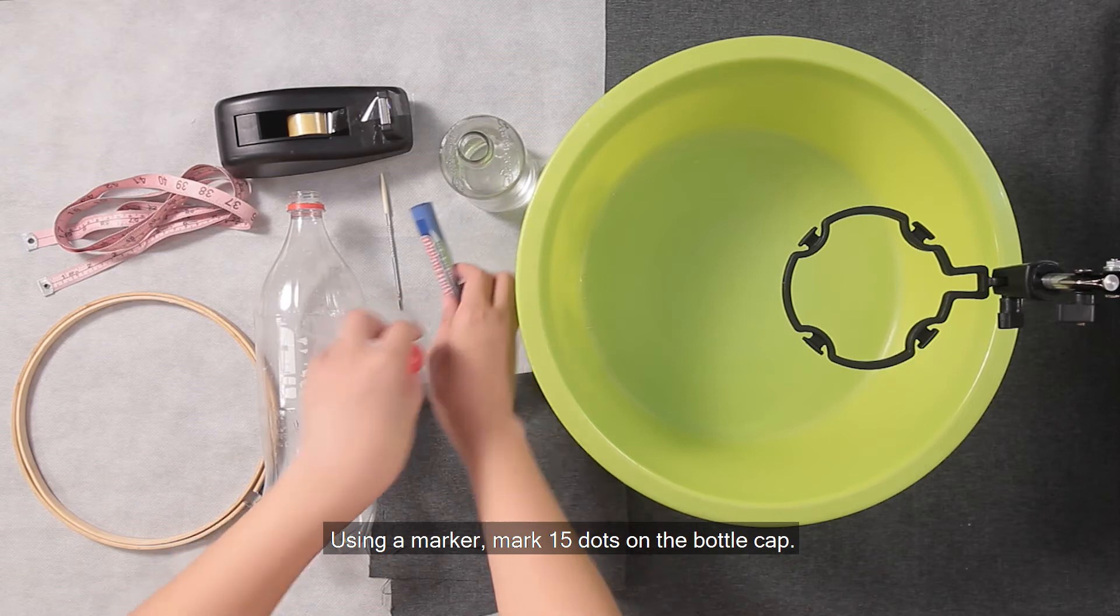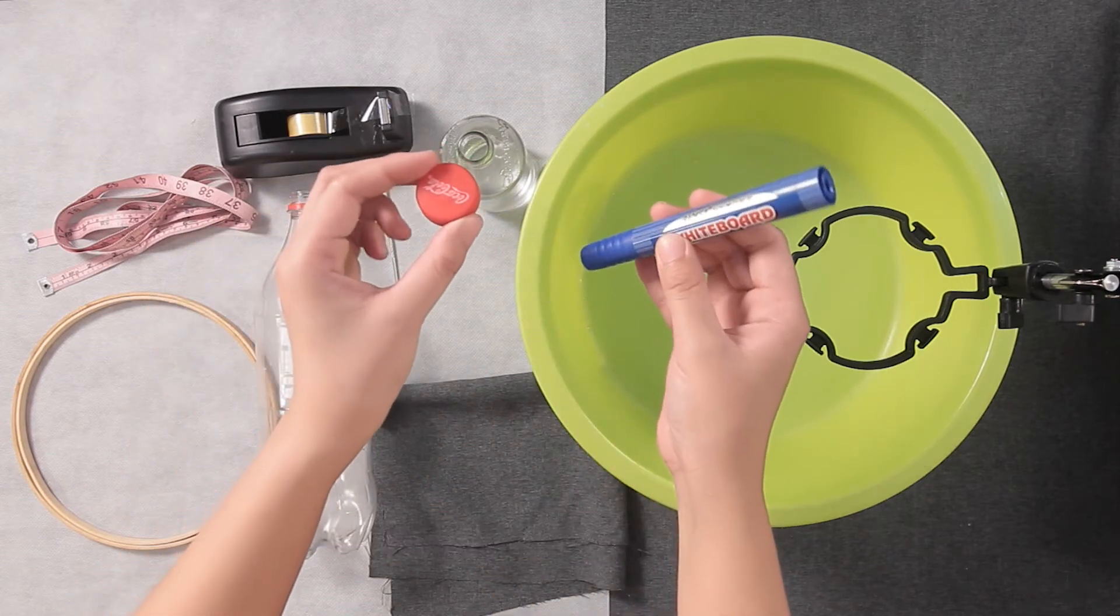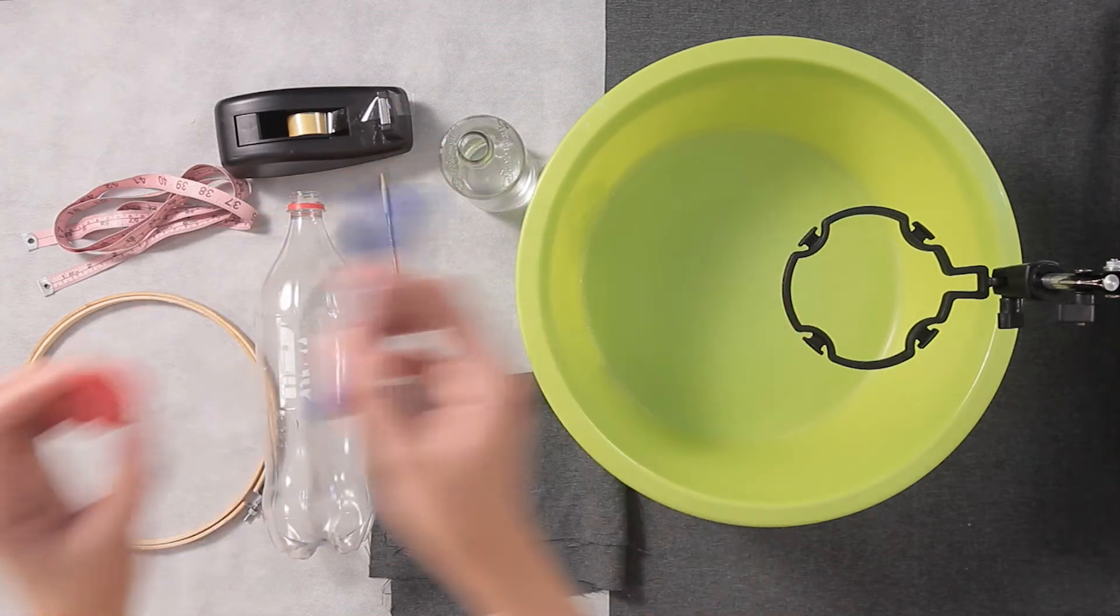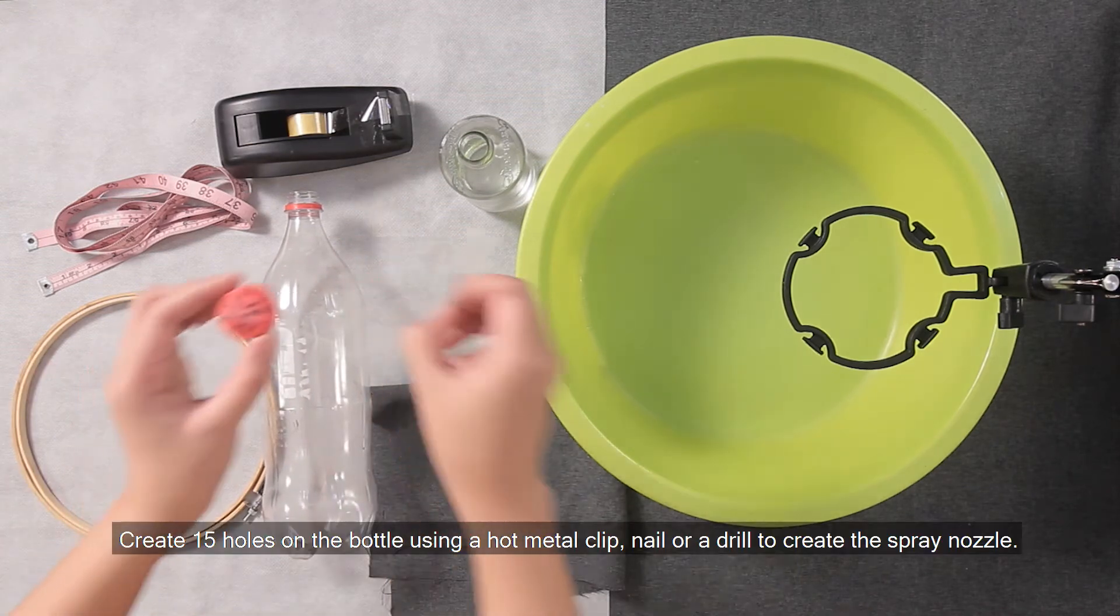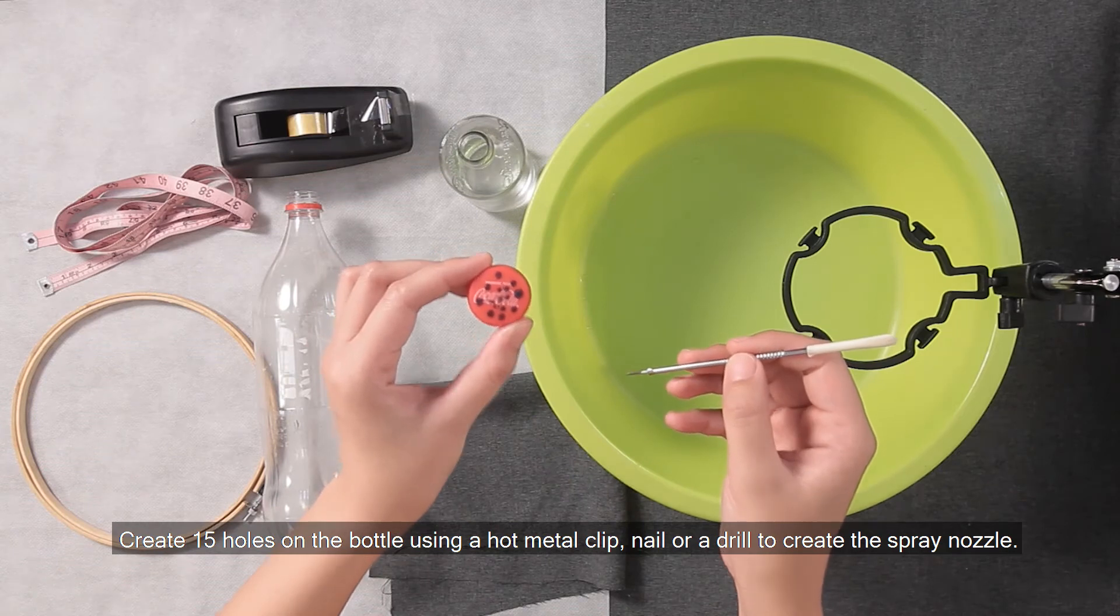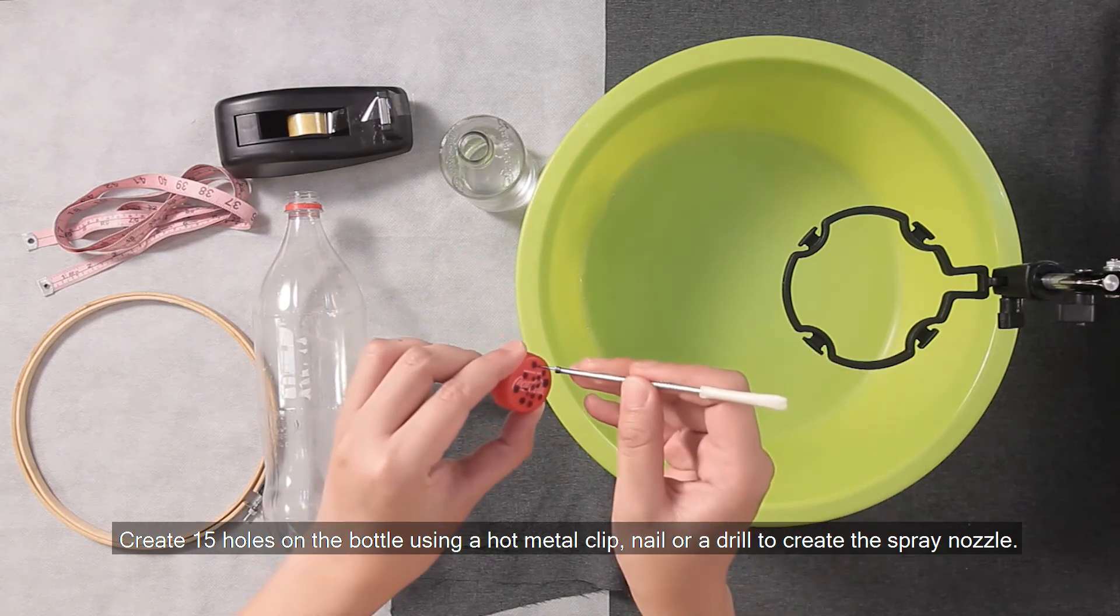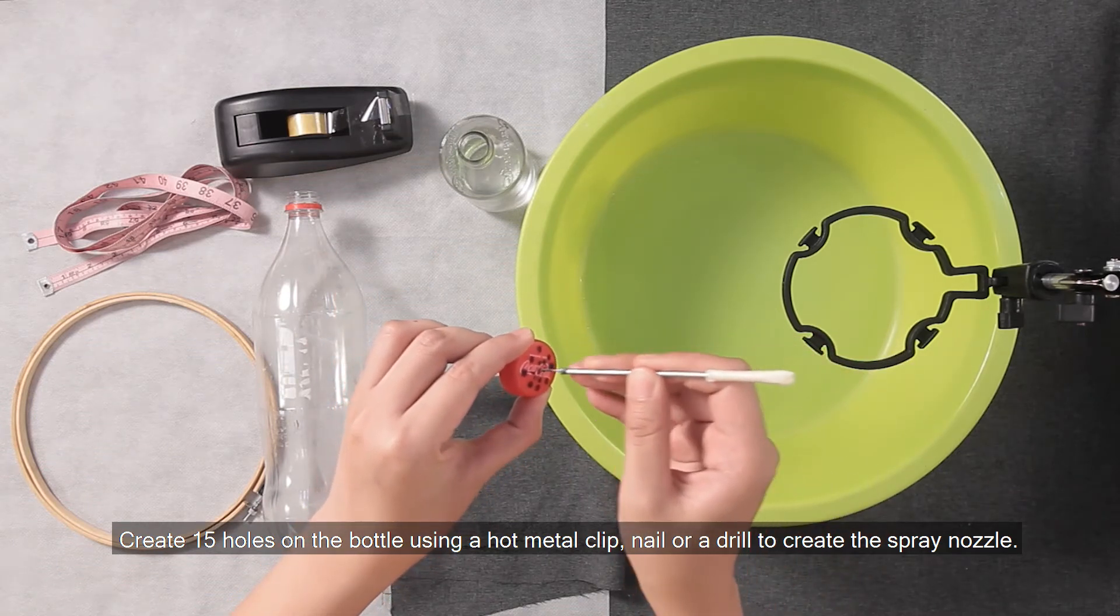Using a marker, mark 15 dots on the bottle cap. Create 15 holes on the bottle using a hot metal clip, nail, or drill to create the spray nozzle.